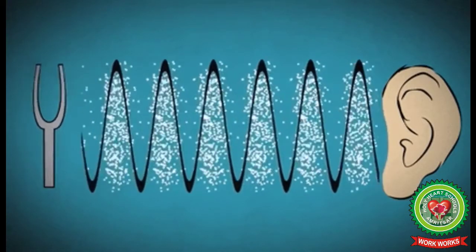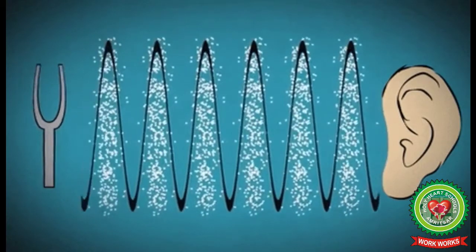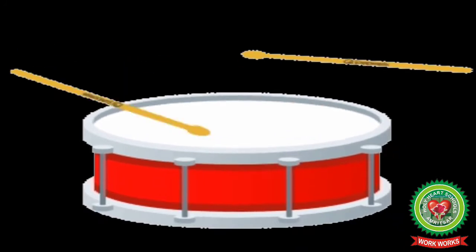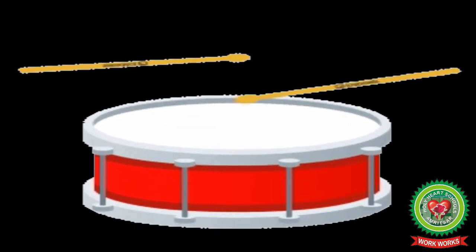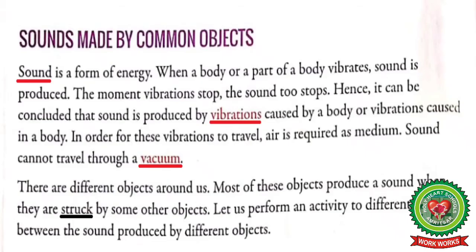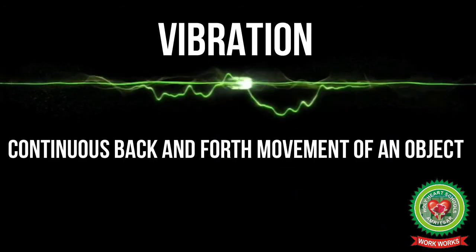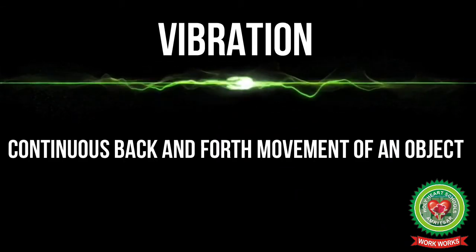Sound is produced when an object vibrates. When a body or a part of a body vibrates, sound is produced. If vibration stops, the sound stops. So it can be concluded that sound is produced by vibrations caused by a body. What is vibration? Vibration is the continuous back and forth movement of an object.